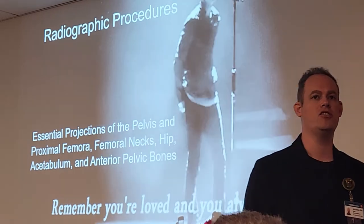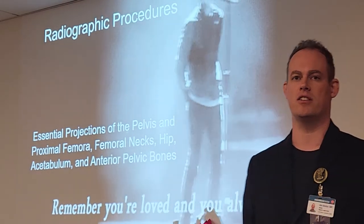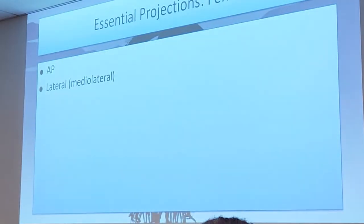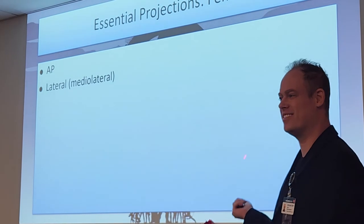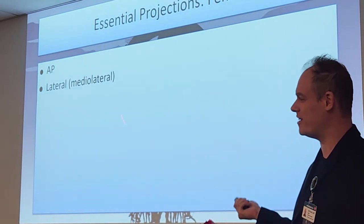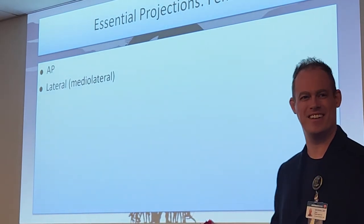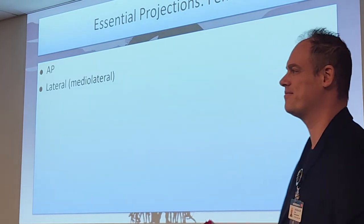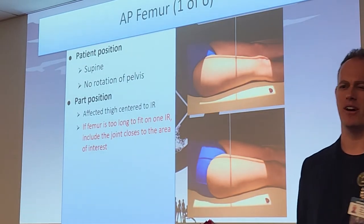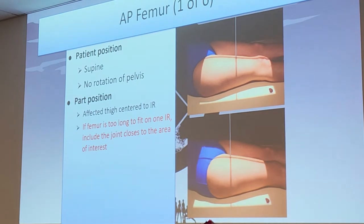Let's start going over some of these procedures — we're starting with the femur. We're going over femoral projections: AP and lateral. I'll be honest, femur X-rays are one of my least favorite to do, partly because you always have to do upper and lower.